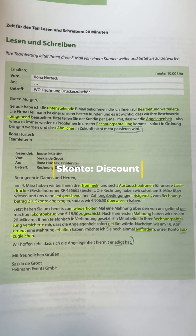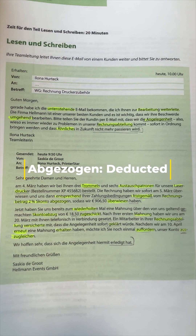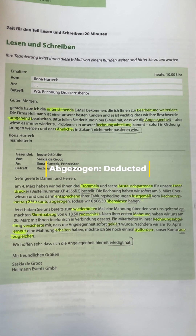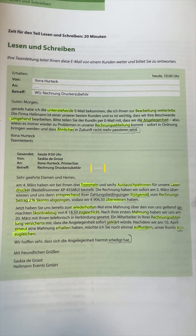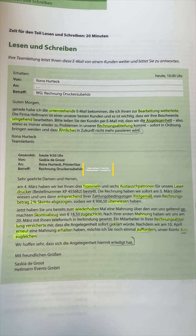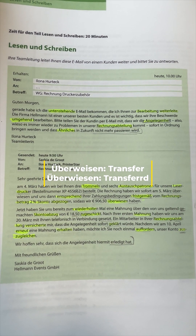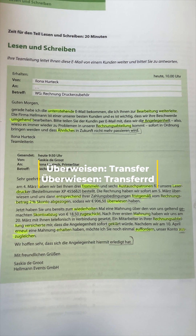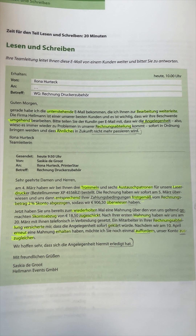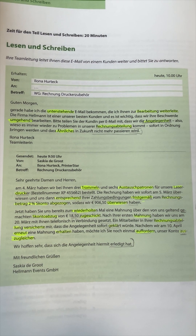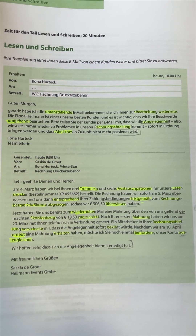After Skonto we have 'abgezogen' — abgezogen means 'deducted.' After abgezogen the next word in the same line we have is 'überwiesen' — überwiesen means 'transferred.' Actually, the infinitive form of this word is 'überweisen' which means 'to transfer,' but here it is used in the past form as 'überwiesen,' meaning 'transferred.'